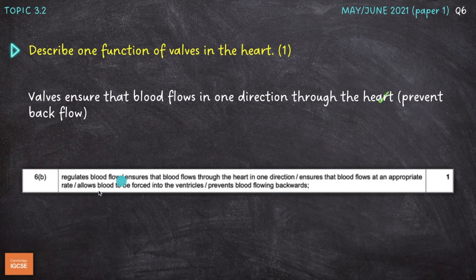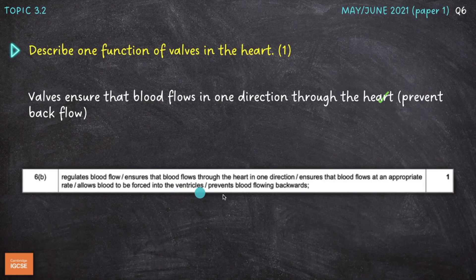The mark scheme says: regulates blood flow, or ensures that blood flows through the heart in one direction, or ensures that blood flows at an appropriate rate, or allows blood to be forced into the ventricles, or prevents blood from flowing backwards. So just saying 'prevents backflow' would have been enough to get you the mark there as well.